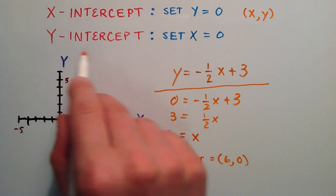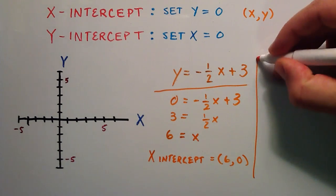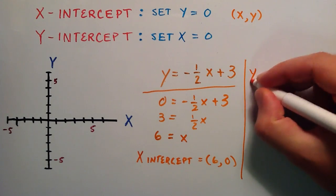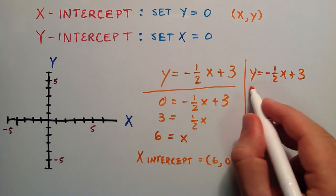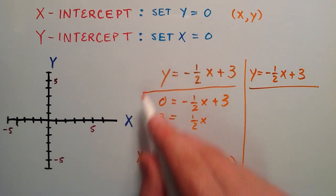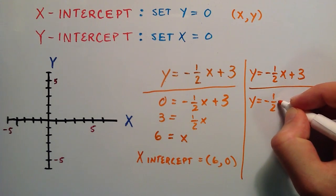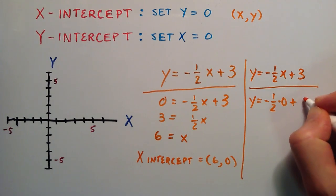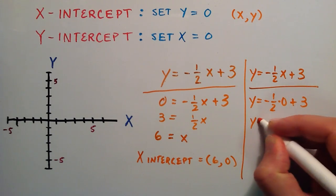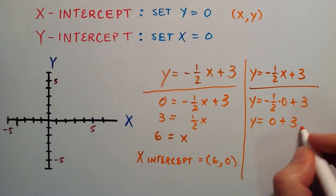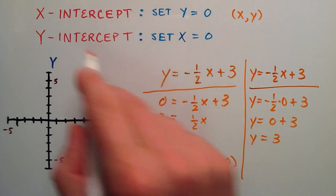Now let's look at the y-intercept. We set x equal to 0. Rewriting the equation: y equals negative 1 half x plus 3, and substituting x equals 0 gives y equals negative 1 half times 0 plus 3. Negative 1 half times 0 is just 0, so y equals 0 plus 3, which means y equals 3.